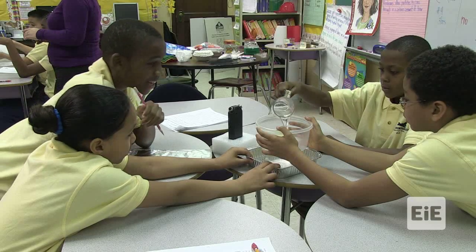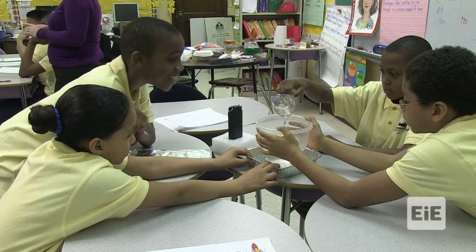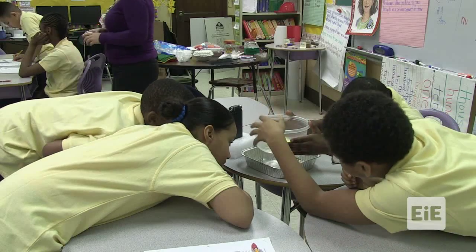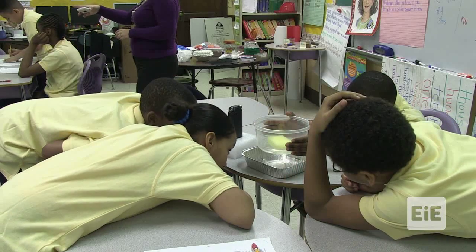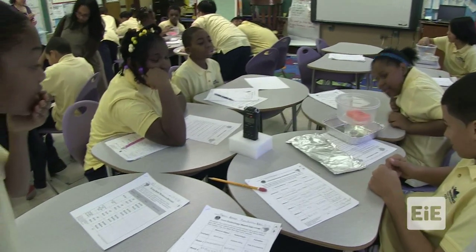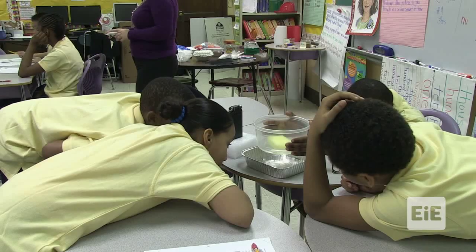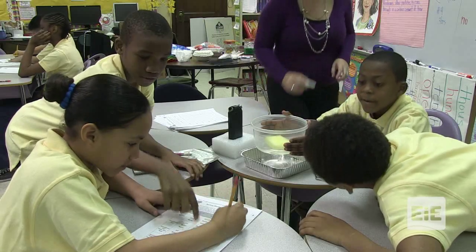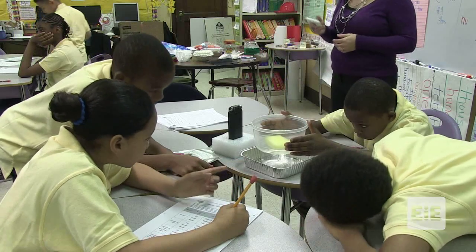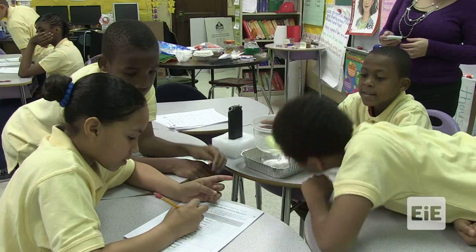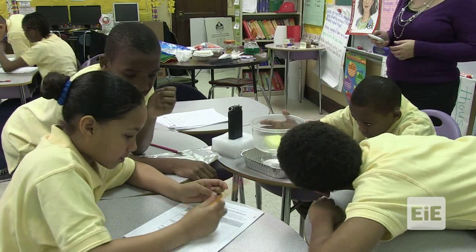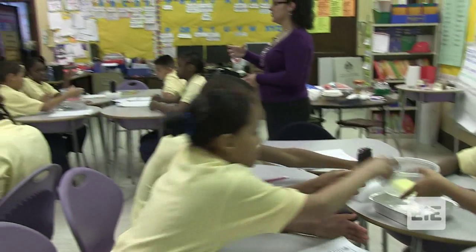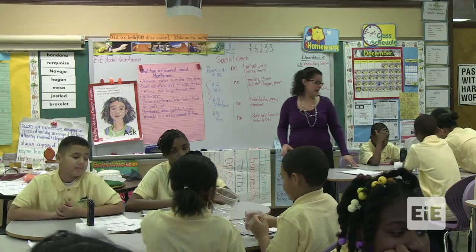Ready? Begin — go! Pour it all the way. Did it come through? It comes in fast — it comes too fast. It's dripping, dripping, dripping. So it goes in fast at first — medium — and then it started to drop by drop. When you're done making your observation, put the water back in the cup. You can squeeze the sponge. Now put the aluminum foil in the container.